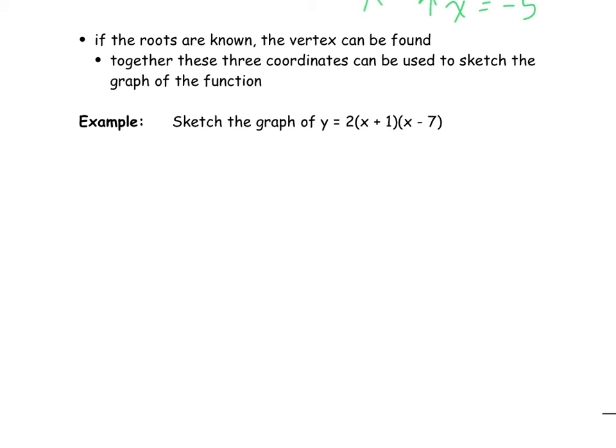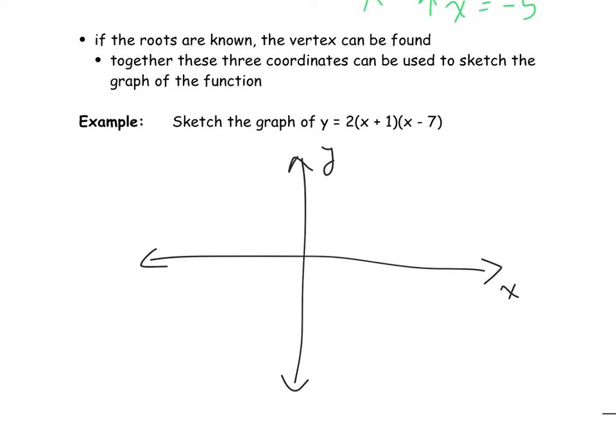If the roots are known, we can also find the vertex. Together we'll use those three coordinates — the two roots and the vertex — to provide a different way of graphing a quadratic function other than using transformations, which can be tricky. Before outlining the specific steps, I want to point out a couple of things you already know but maybe haven't put together.